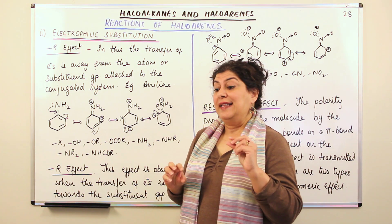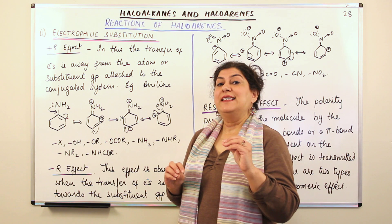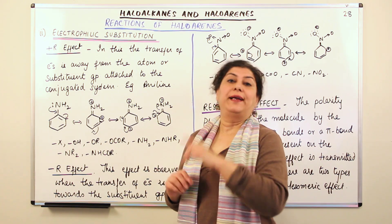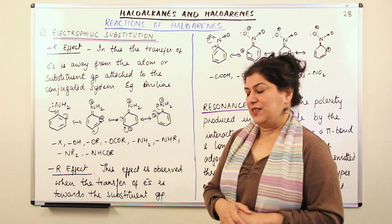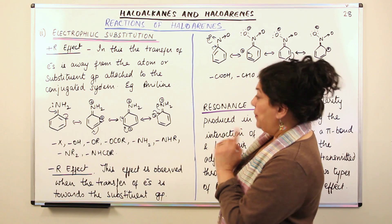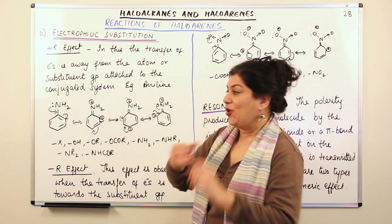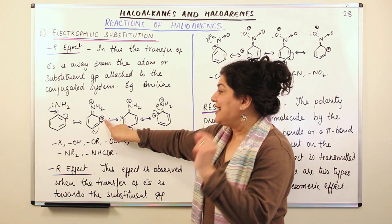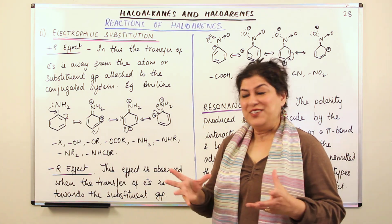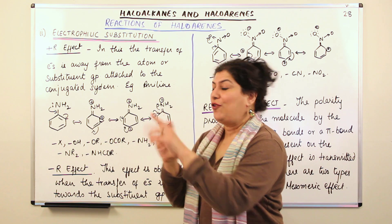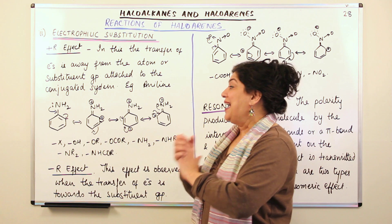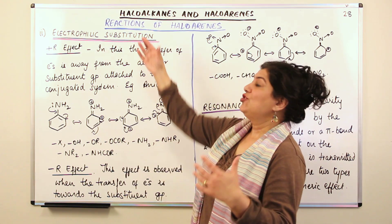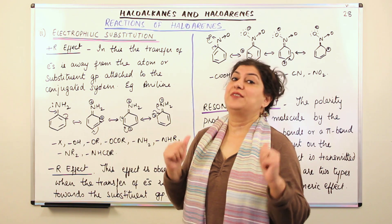The halogen atom is deactivating due to inductive effect and ortho and para directing. Why is it ortho and para directing? It is ortho and para directing because of resonance effect — the electrophile is attacking electrons, and where are the electrons free? The dangling free electrons are at the ortho and para positions. The electrons are not in bound form at the ortho and para positions, and that is why the electrophile will come and attack there. Only the substitution of hydrogen will take place at the ortho and para positions, and that is why a halogen is known as an ortho-para directing group due to its positive resonance effect.